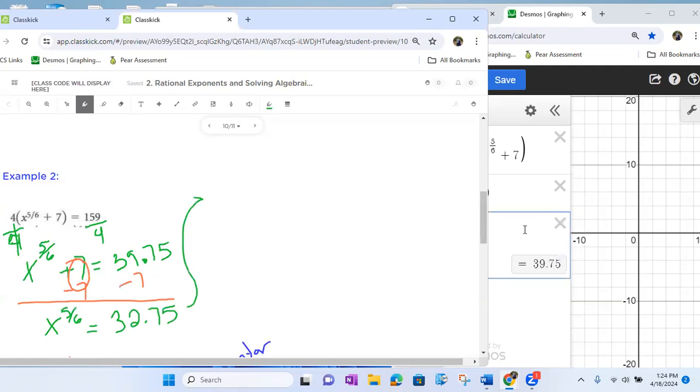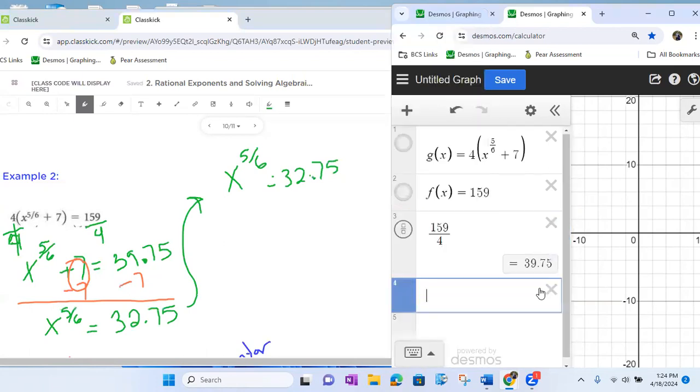I'm just going to rewrite that equation right here. So x to the 5 sixth equals to 32.75. And once again, as we're doing this work, you may make a mistake. So we're going to take that 39.75 and just kind of keep our work together, minus seven. Check it out, 32.75. That's what we were expecting.